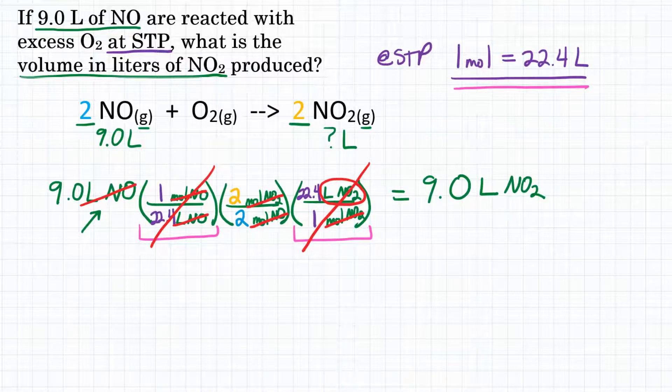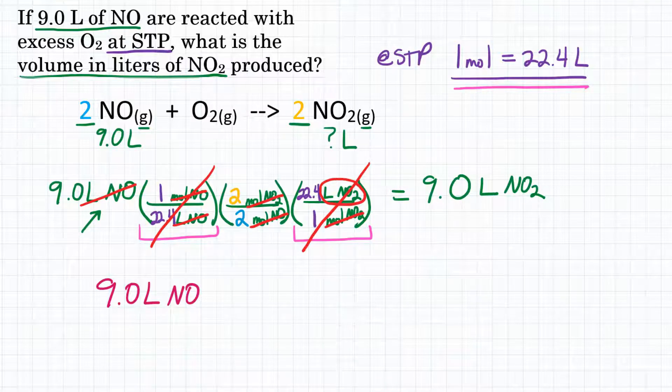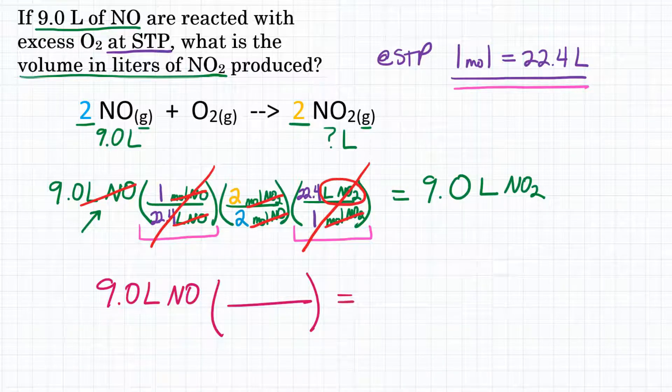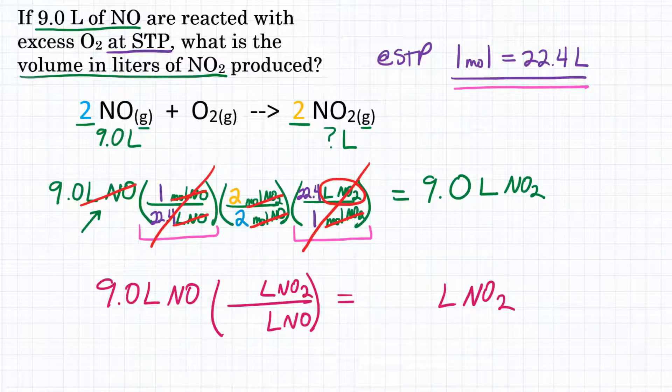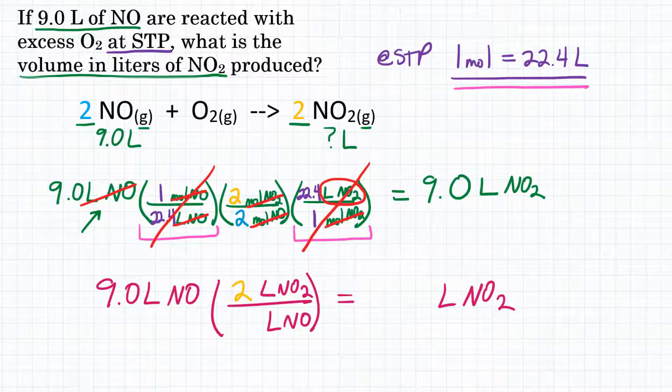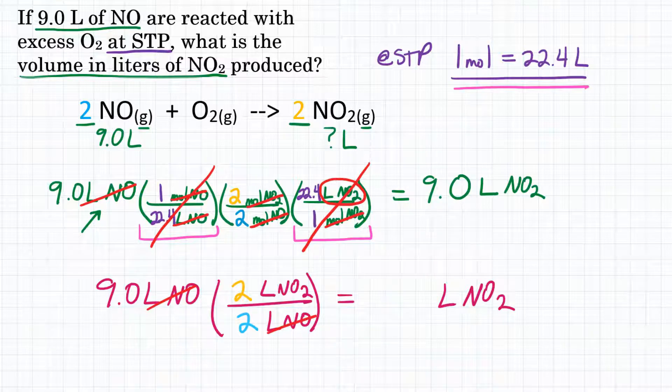You can go directly from volume using your coefficients. If we wanted to set that up that way, we would have 9.0 liters of NO, we would multiply by one conversion factor to get 2 liters of NO2, and we would only need liters of NO on the bottom, and we could go directly to liters of NO2 using just our coefficients as what we would call our volume ratios. Liters of NO would cancel out, and we'd just be doing 9 times 2 over 2, which won't change our answer. So our final answer is 9.0.